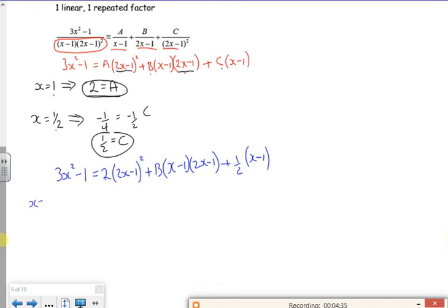If I try x is 0, like I said before, you can choose any number you want. You can use a million if you wanted, if you're mad enough to. Right, so x is 0 gives me minus 1. x is 0 in here would give me 2, that first bracket. x is 0 in here would give me B. x is 0 in the last bracket would give me minus 1 half.